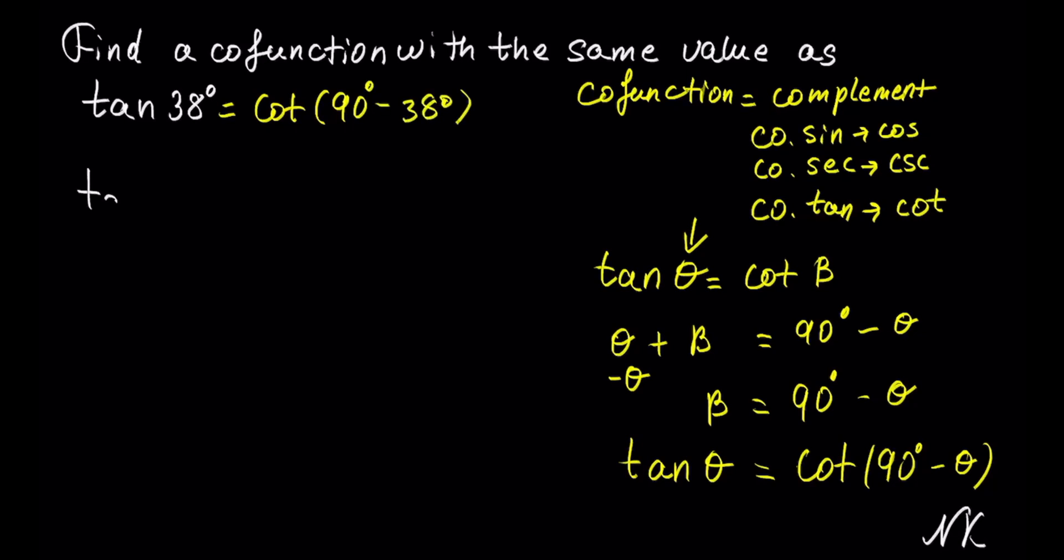So, we get that tangent of 38 degrees is equal to cotangent of 52 degrees. And this is our solution. That's all.